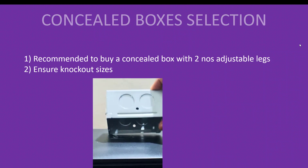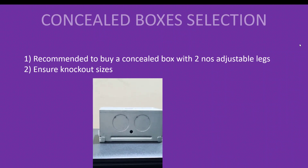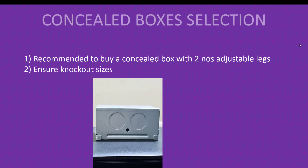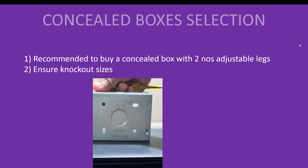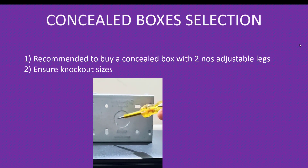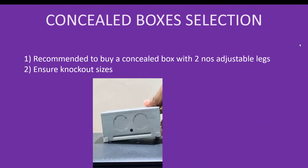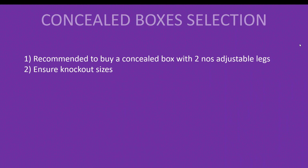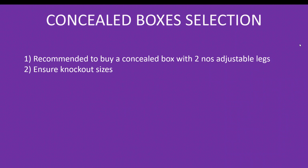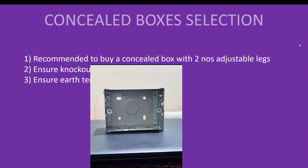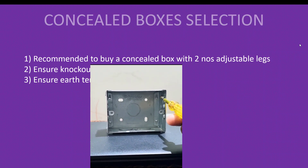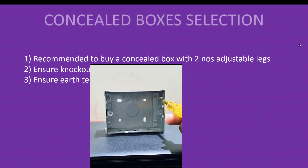The second point is to ensure proper knockout sizes. All concealed boxes will have factory-made knockouts — you just open the knockout and connect the conduit. Please ensure the correct size: normally in power wiring we use 25mm conduit, and in light wiring we use 20mm conduit. So based on the application, ensure the knockouts are either 25 or 20mm as required. The third point is earth terminals — there should be an earth terminal in the concealed boxes so you can directly connect the earth wire to the box, protecting against earth faults.